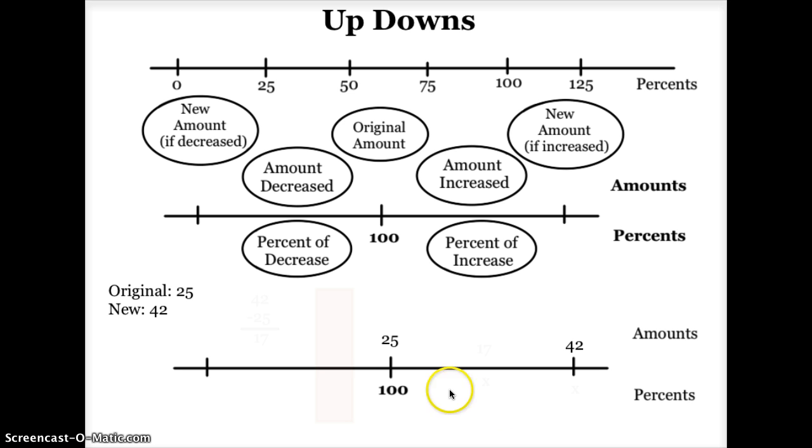Now I want to find out how much I've increased from 25 to 42. The way I can do that is just subtraction. 42 minus 25 is 17. So I know that I've gone up 17 from 25 to get to 42. Notice that 25 plus 17 is equal to 42.